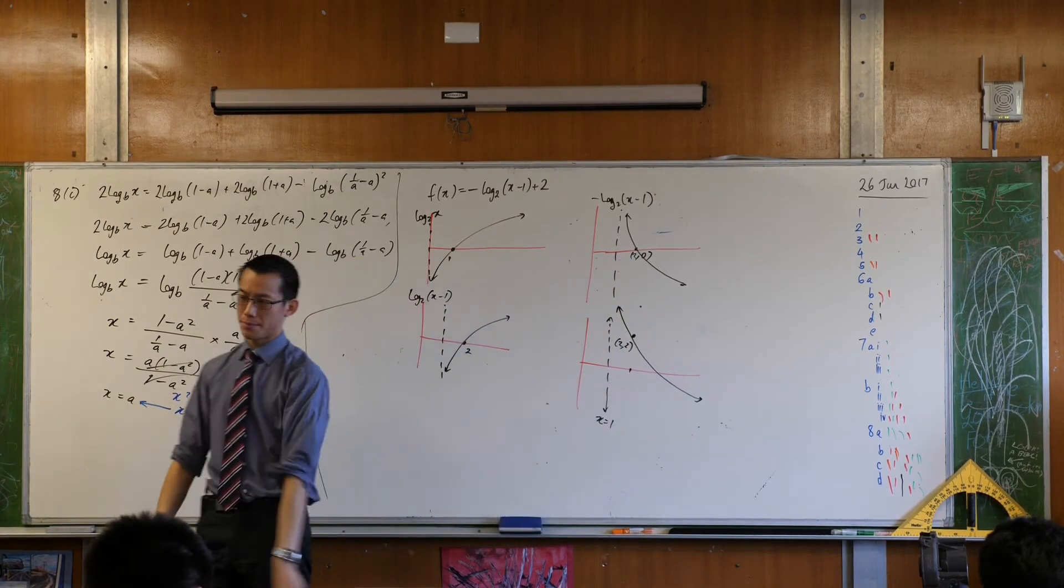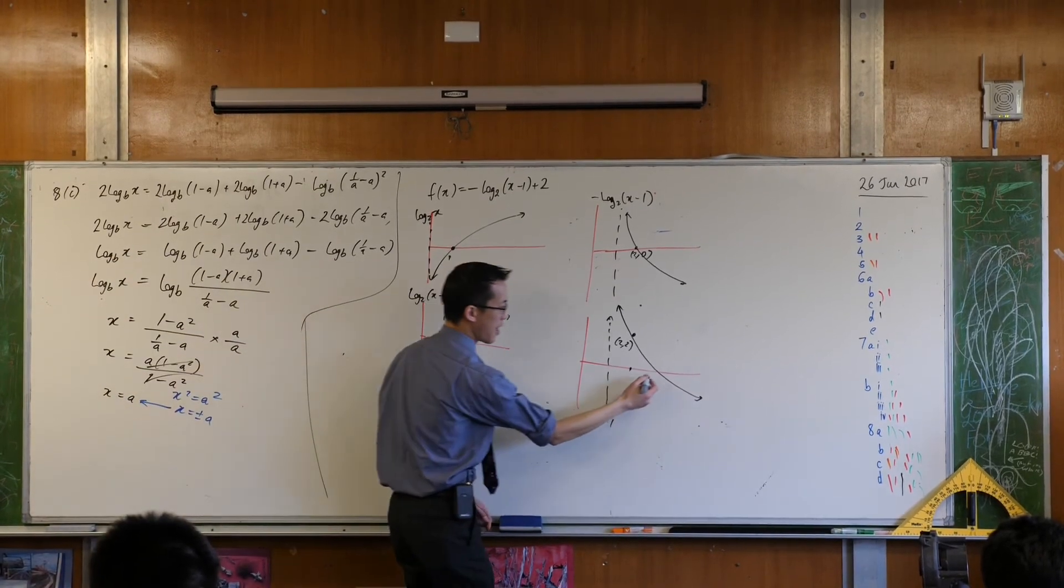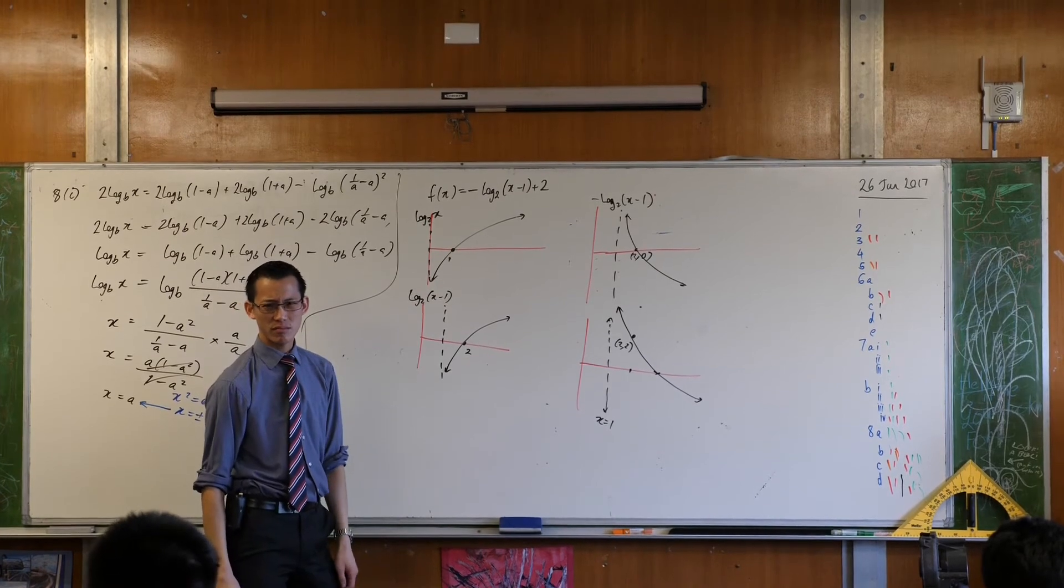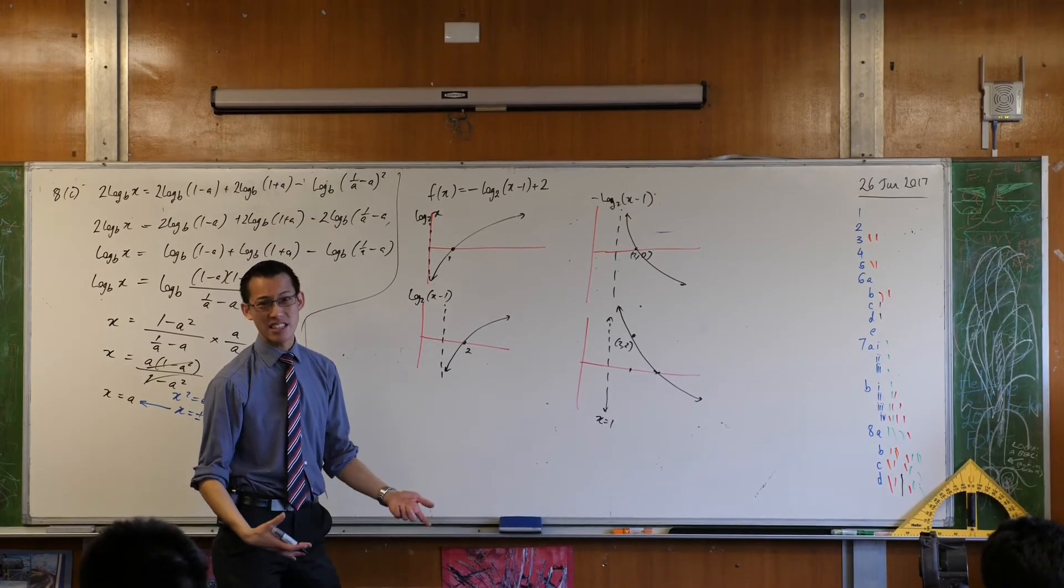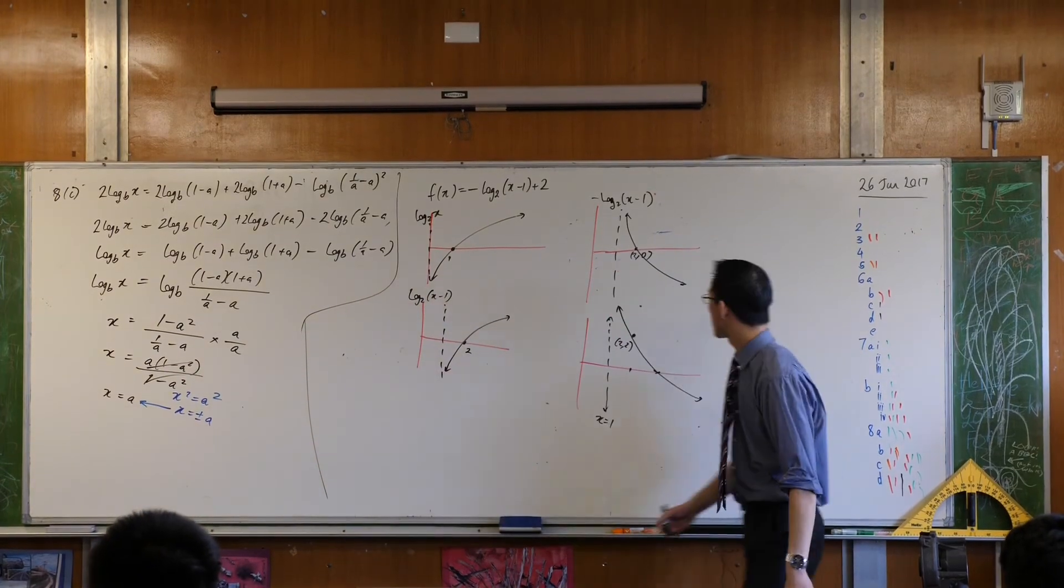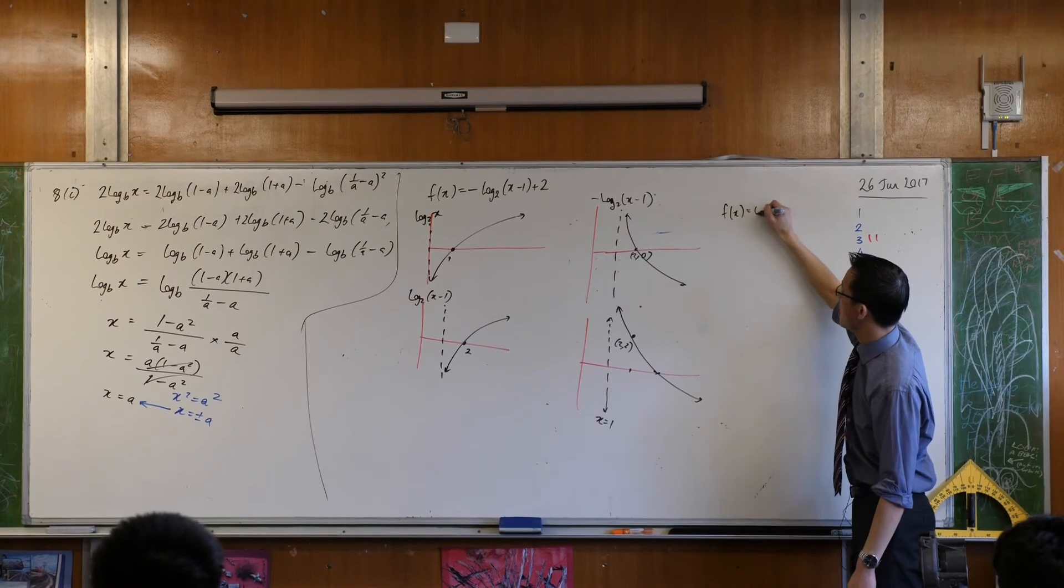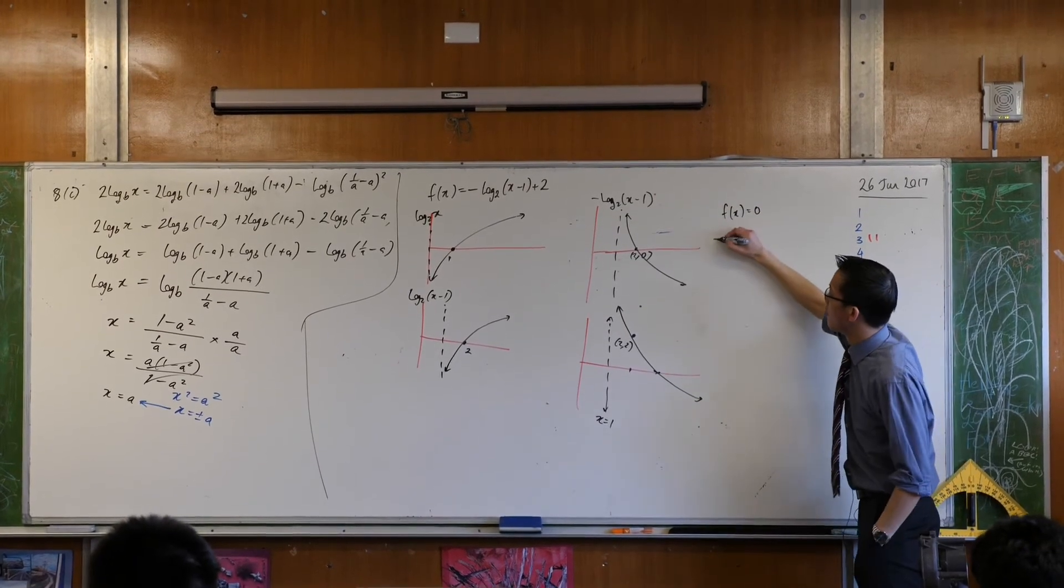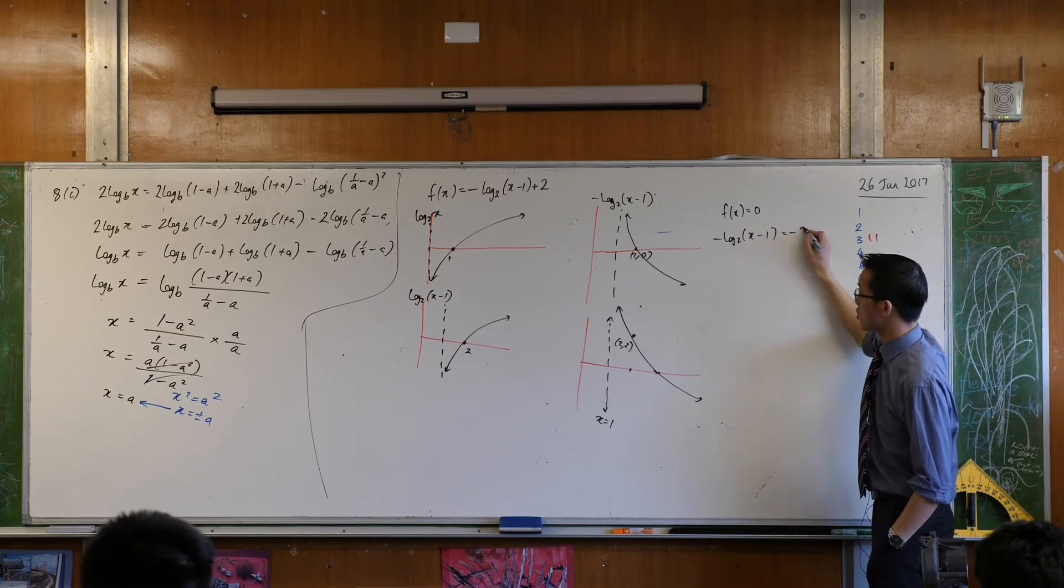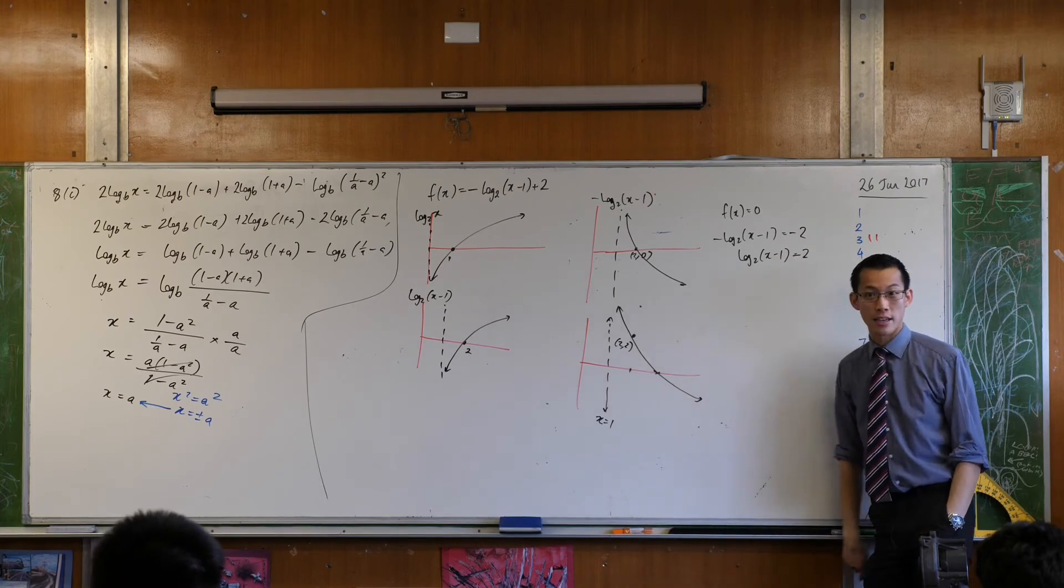So I've got one point. I'm going to need some other information here. So now I need to know where that is. How do I work out that? This is an x intercept. The normal way I find x intercepts is by letting y equals 0, or f of x equals 0. So if I say that, then minus log base 2 of x minus 1 equals negative 2, log base 2 of x minus 1 equals 2. Someone want to help me out here?